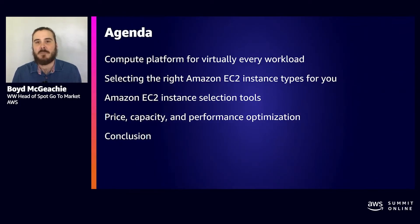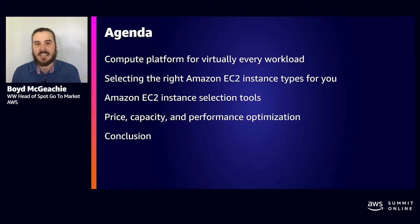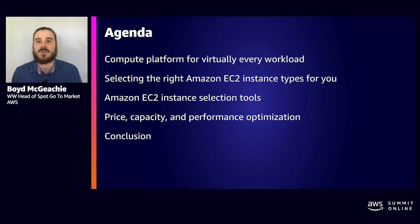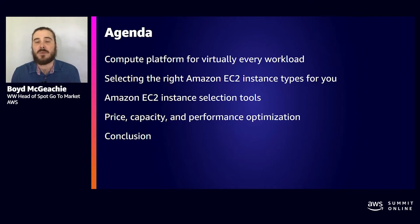We're going to start by talking about the EC2 compute platform generally, and how we have an offering for almost every workload. Then we'll talk about how, with so many different options, you can think about selecting the right EC2 instance for your workload. Then we'll go into some of the tools that can help make that easy and automate that on your behalf. Finally, we're going to end with how to get the best price, the most capacity, and really optimize performance.